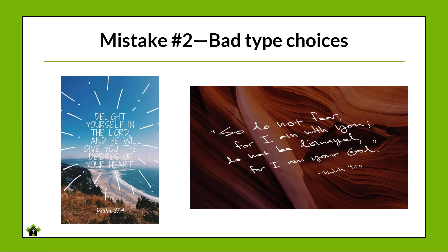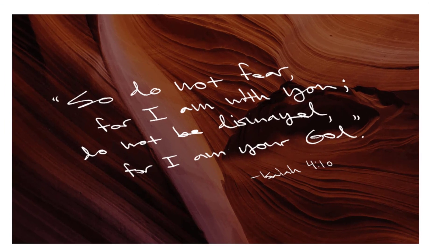The next mistake is bad type choices. A lot of times we forget that our number one goal is for people to be able to read things. People who don't know typography pick out fonts they think look interesting, but that doesn't mean people will read them — they just can't. The one on the right is especially problematic because it's kind of halfway cursive, and a lot of younger people can't read cursive at all. It's very hard to read, and slanted at that angle, which isn't great either.